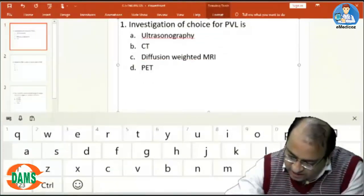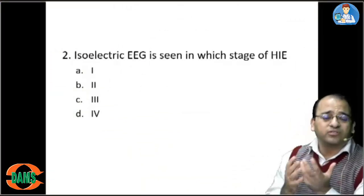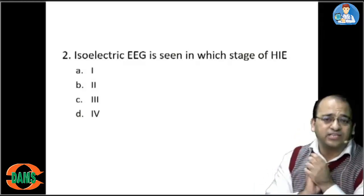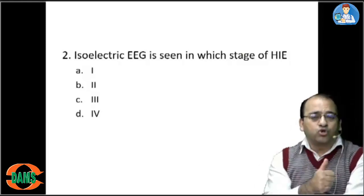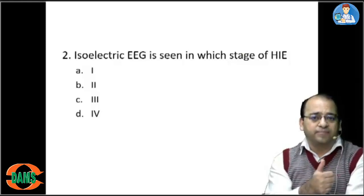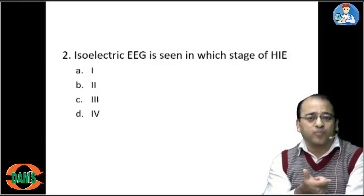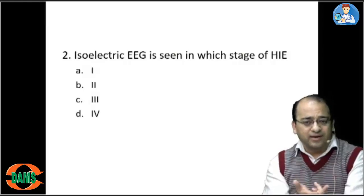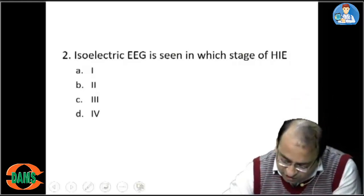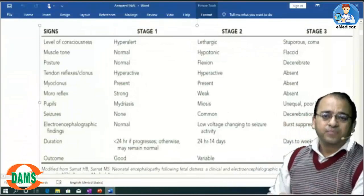The next question is very important because in every exam you'll get a question on Sarnat and Sarnat staging of HIE: isoelectric EEG is seen in which stage of HIE? Remember: the most common cause of seizure in a newborn is HIE. The drug of choice for seizure in a newborn is phenobarbitone. The most common type of seizure in a newborn is subtle.